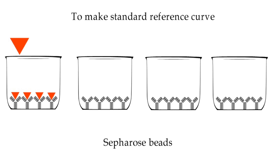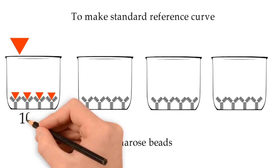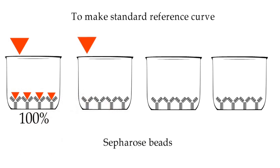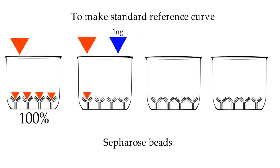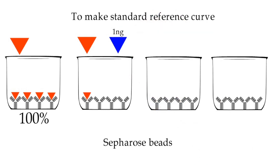In first bead, saturating amount of radiolabeled antigen X are added. Beads are then centrifuged and washed and the radioactivity of antigen-antibody complexes retained in the beads is measured. Let's take this as 100%. In second bead, add fixed quantity of radiolabeled antigen X with unlabeled antigen X, just for example 1 nanogram. Labeled and unlabeled antigen molecules compete for the antibody.